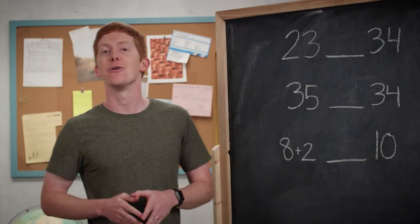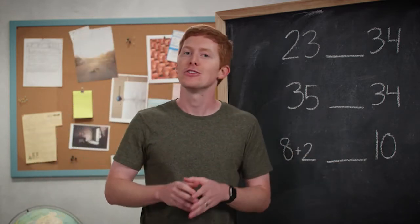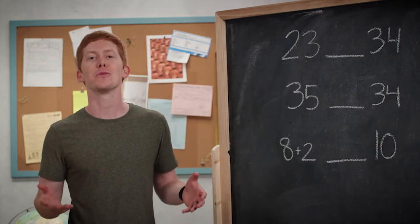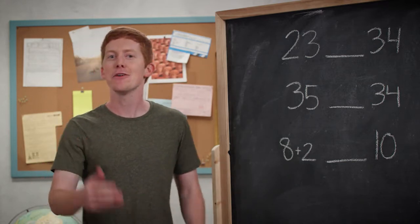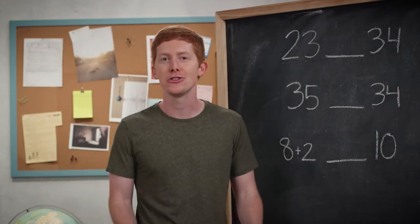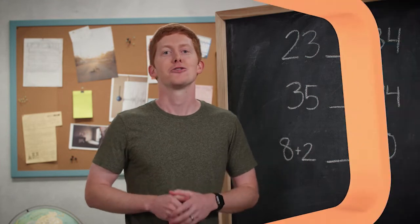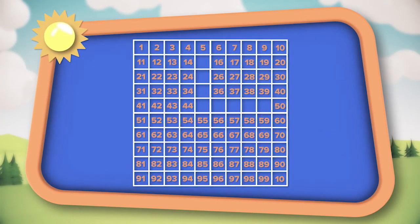Now we're going to move on to something a little bit different, and we're going to use something called a hundreds chart. Have you ever seen a hundreds chart? I bet you have. So here's a hundreds chart, and what you notice is that there are some numbers missing. There's a line going on our hundreds chart, and that is one of our tasks today — we've got to figure out what numbers should go in there.